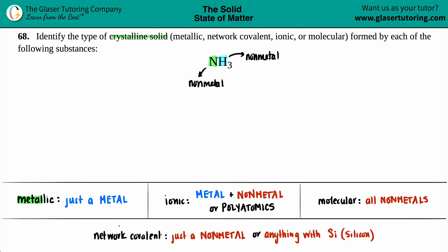Now, network covalent crystalline solids are basically the same as metallic crystalline solids, just swapped. Metallic crystalline solids are just a single metal; network covalents are just a single non-metal. I have two different non-metals here—I have nitrogen and hydrogen—so that's out. Just know that you could also have a network covalent crystalline solid if you start seeing silicon (Si), but no silicon here, so network covalent is out.